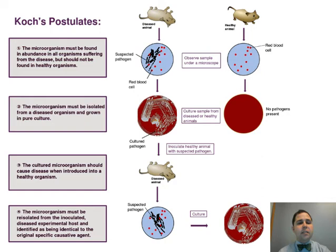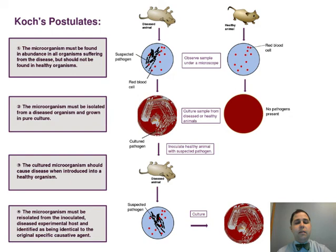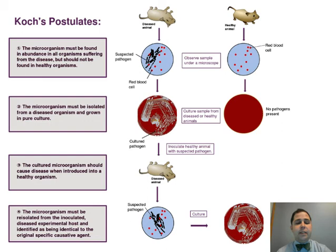His first postulate is that the microorganism must be found in abundance in all organisms suffering from the disease, but should not be found in a healthy organism. The second postulate is that you should be able to isolate the microorganism from that diseased organism — for example, by drawing blood and spreading it on a culture plate with suitable media, you should see the pathogen growing. His third postulate is that once you get that disease growing outside the body, by putting it into another organism, you should cause the disease in a new healthy organism. The fourth postulate is that once you get that second sick organism, you should again be able to isolate the pathogen and culture it — this process should be repeatable, showing that a tiny living organism is what's causing the disease.